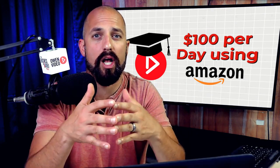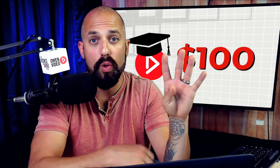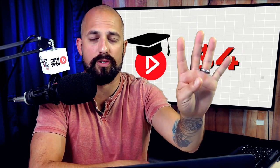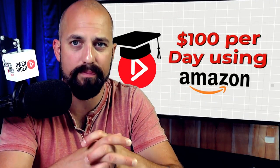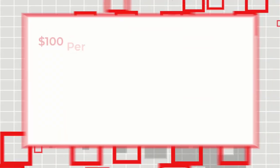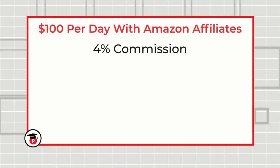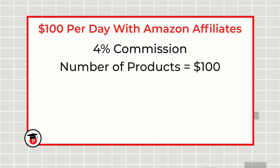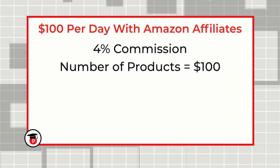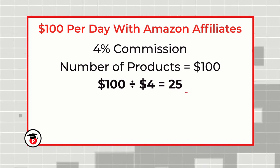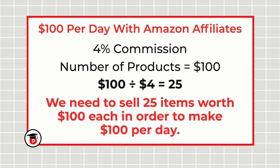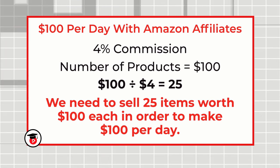As you first get started, you're going to be getting paid 4% on every dollar that you sell. For example, if you sell a product that is $100, your commission is going to be $4 on that. So how do you make $100 per day? It comes down to that blueprint equation. At 4% commission, you need to figure out how many products you need to sell to equal $100 per day. We take $100 and divide it by $4, which gives us 25 — meaning we've got to sell 25 $100 items at 4% commission in order to make $100 per day on Amazon.